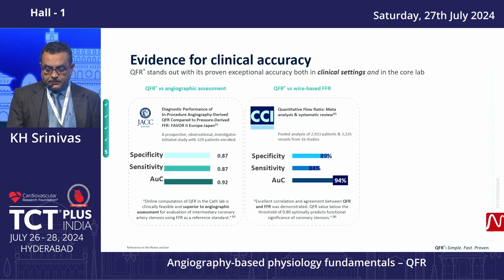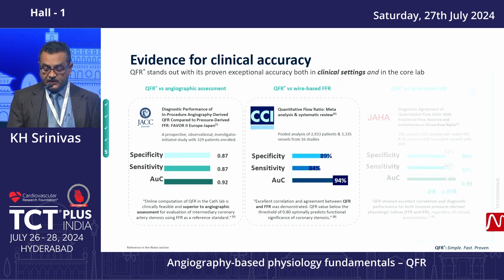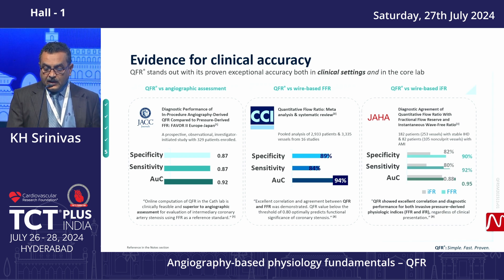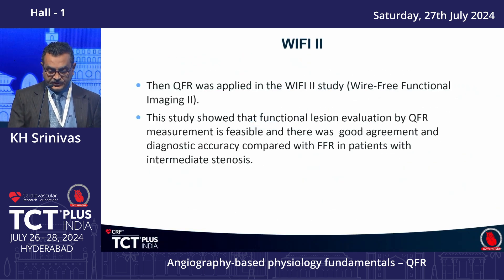A meta-analysis pooling nearly 3,000 patients across around 3,400 vessels showed excellent correlation and agreement between QFR and FFR, with QFR below the threshold of 0.8 optimally predicting the functional significance of coronary stenosis. QFR has also been compared with IFR, showing excellent correlation and diagnostic performance for both invasive pressure-derived physiological indices — FFR and IFR — regardless of clinical presentation.